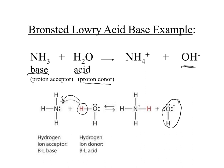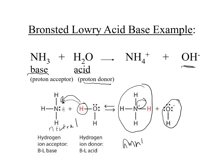So we get hydroxide ion. Our base, which is the proton acceptor, when it receives that hydrogen ion, we now have added a fourth hydrogen, forming NH4. This was neutral, and now we end up with something with a positive charge — our ammonium ion.